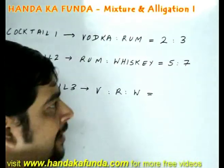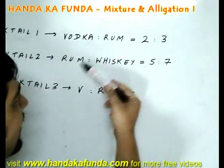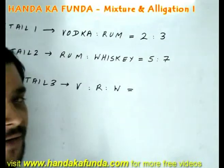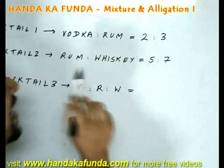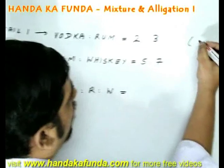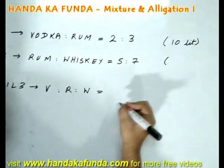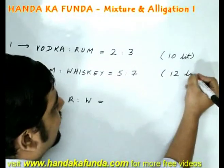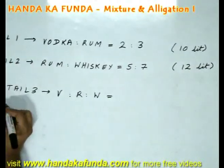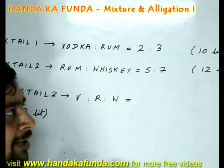Can I directly add the rum values — say 3 plus 5 — to get the answer? No, I cannot. To solve this type of question, I need the exact quantity of cocktail 1 and cocktail 2. Say cocktail 1 is 10 litres and cocktail 2 is 12 litres. My final cocktail 3 will be 10 plus 12, which is 22 litres. The question is: what is the ratio of the components?